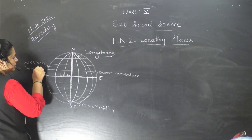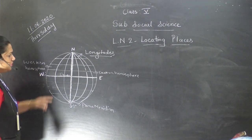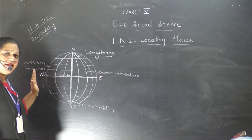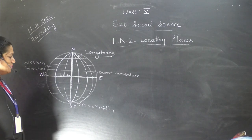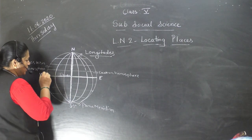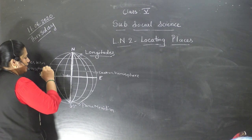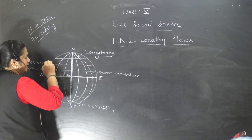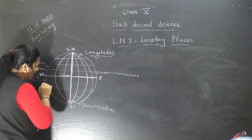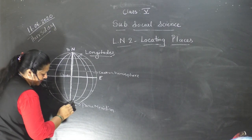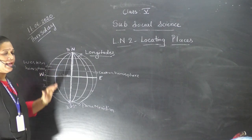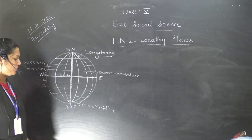The part of the earth which is towards the eastern side is called the eastern hemisphere, and the part towards the western side is called the western hemisphere. So like the equator, the prime meridian divides the earth into eastern and western hemisphere. The equator is marked as zero and we have 90 latitudes to the north and 90 latitudes to the south, so total 180 latitudes.